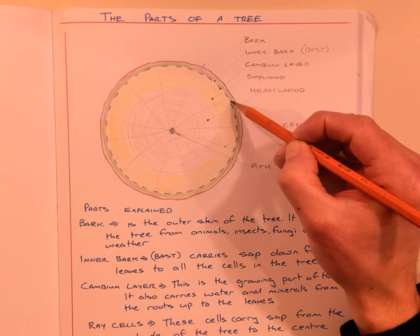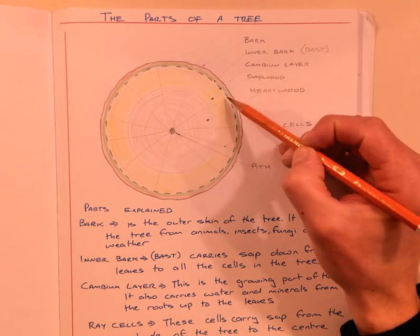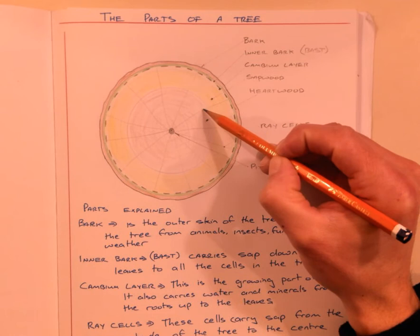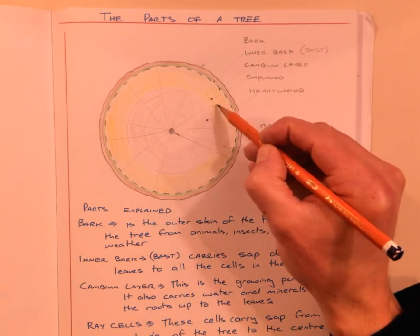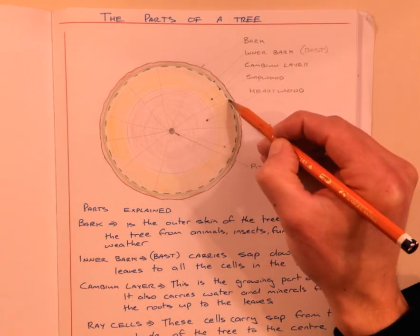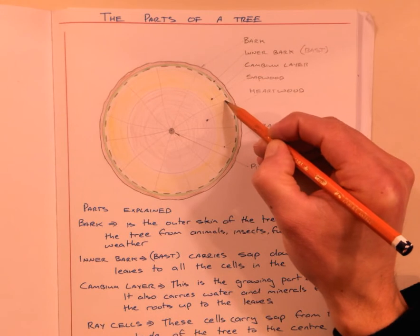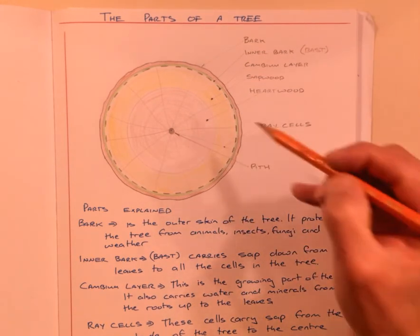The inner bark carries the sap back down the tree so the tree can get fed. We have ray cells here - the ray cells carry that sap and food inward towards the center of the tree. So the inner bark carries the sap down, the ray cells carry the sap in towards the center of the tree.